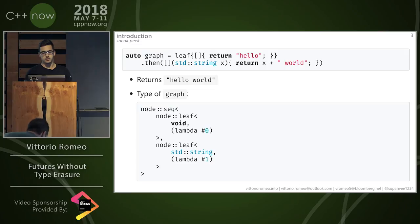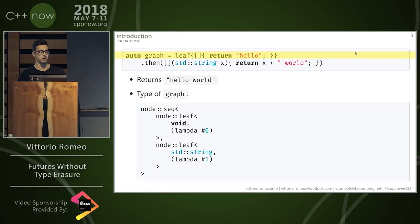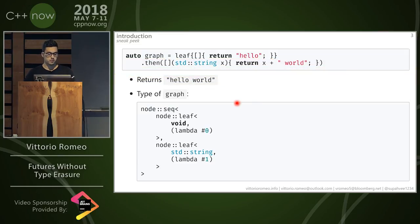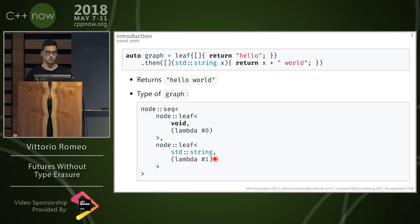Here's a sneak peek — this is what we're going to do. As an example, we're going to have a graph that begins from a leaf that simply returns "hello", and then we can attach a continuation that, taking an std::string, adds "world" at the end of it. Basically this is a composition of nodes that returns "hello world". And the type of this graph is some weird expression-template-like type, consisting of a sequential node where the first node is a leaf that takes nothing and has a lambda.